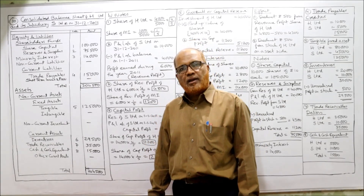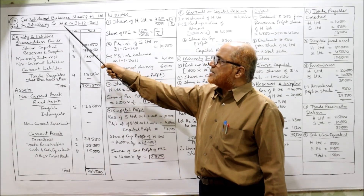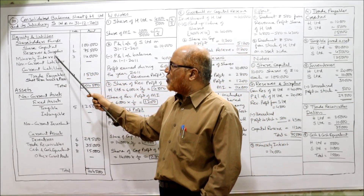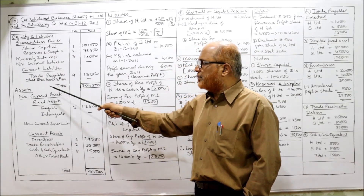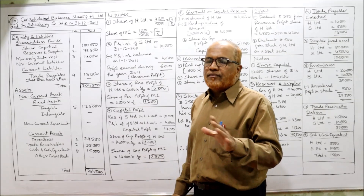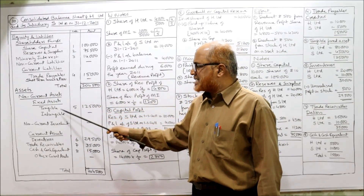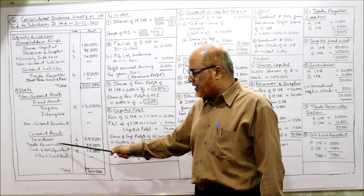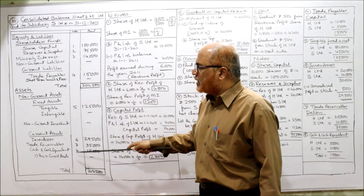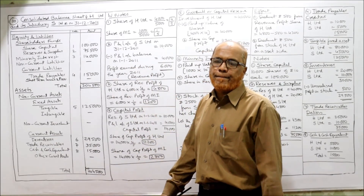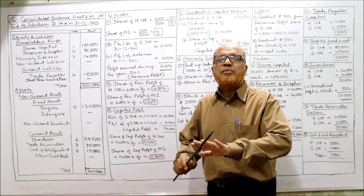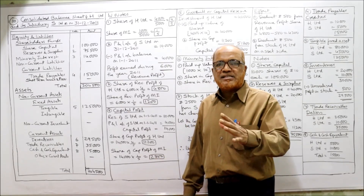Consolidated balance sheet of H Limited and subsidiary S Limited as on 31st December 2011. Format: equity and liabilities — shareholders' fund: share capital, reserves and surplus, minority interest. Non-current liabilities and current liabilities: trade payable, short-term loans and provisions. Assets: non-current assets — fixed assets (tangible and intangible), non-current investments. Current assets: inventories, trade receivable, cash and cash equivalents. Draw the blank balance sheet and calculate all amounts in working notes.